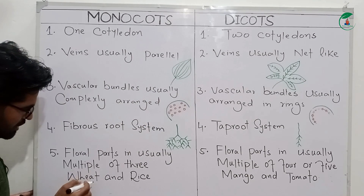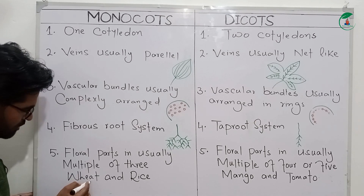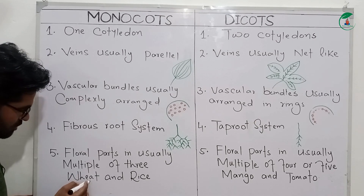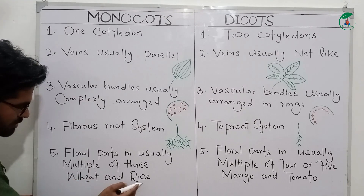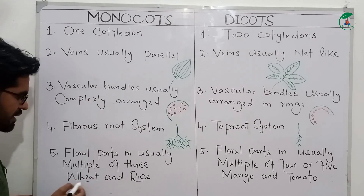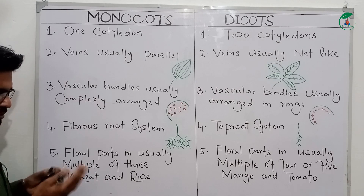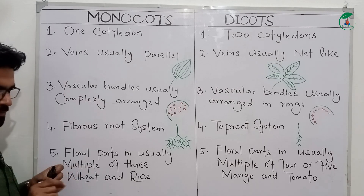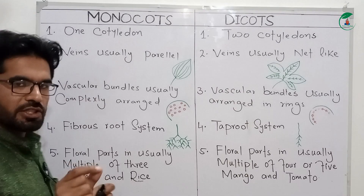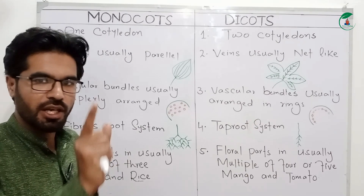Examples of monocots are wheat and rice.